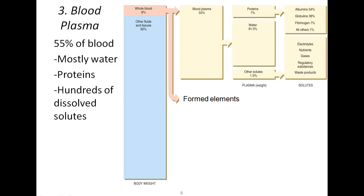Whole blood encompasses only about eight percent of all fluids in the human body. Roughly half of that blood is plasma and the other half is formed elements. Blood plasma is mostly water, with some proteins and solutes dissolved in it.